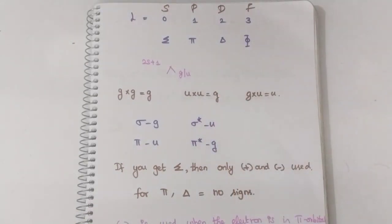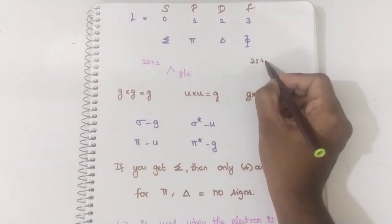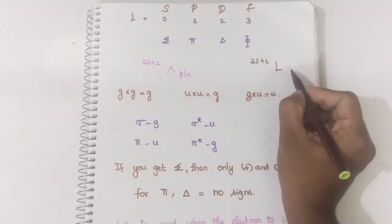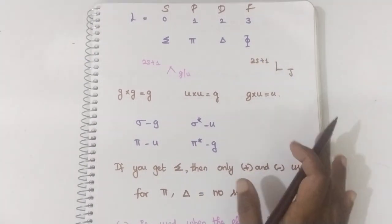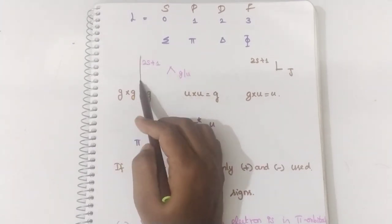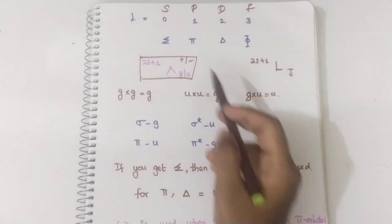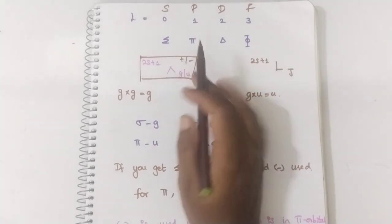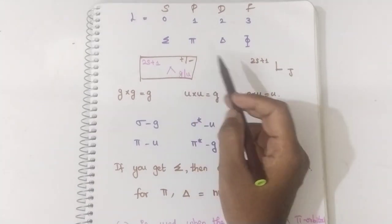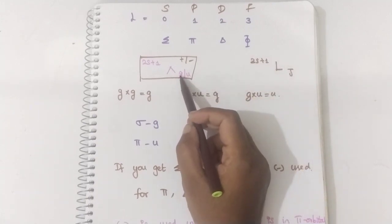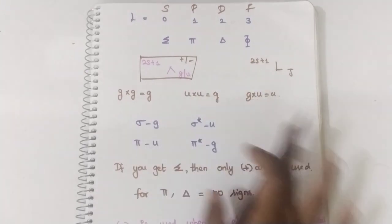In the atomic term symbol, how will you represent? It is 2S+1 with L, and subscript J. But in diatomic species, we will represent it with 2S+1 as the same multiplicity, and L is denoted using the Greek letter — sigma, pi, delta form. And instead of J, here we will have gerade or ungerade. Plus or minus is also involved.